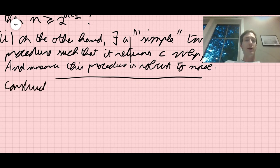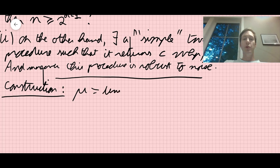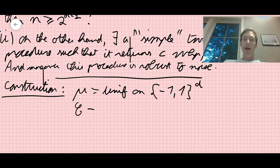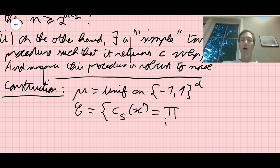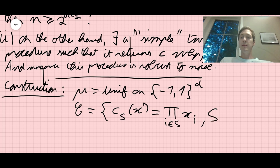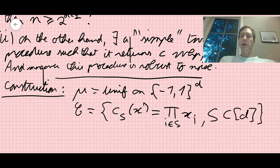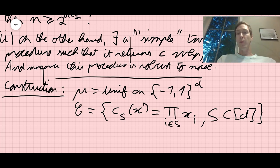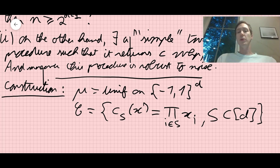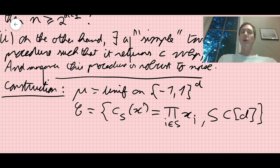The construction is parity. mu is the uniform distribution on the discrete hypercube {-1, 1}^d. The function class C is the set of parity functions: C_S(x) equals the product for i in S of x_i, where S is a subset of indices {1, ..., d}. We call this parity because it's just counting how many +1s and -1s you have in the set S, which tells you whether the result is +1 or -1.